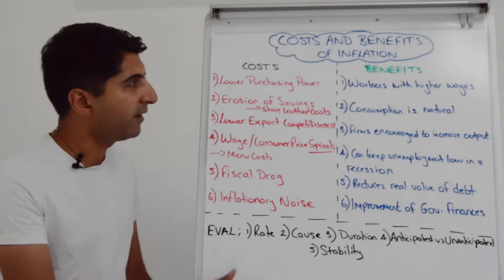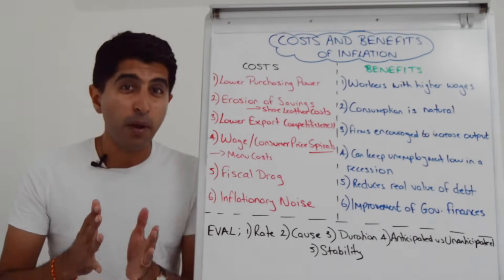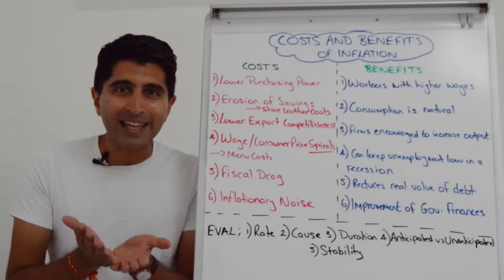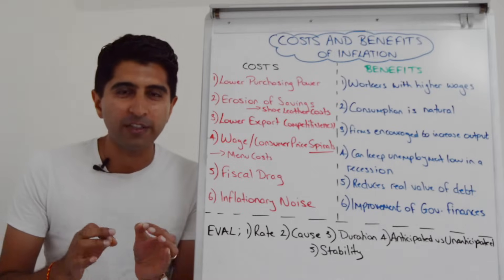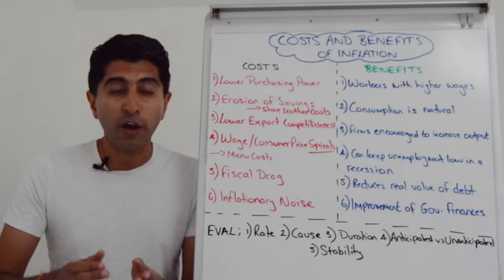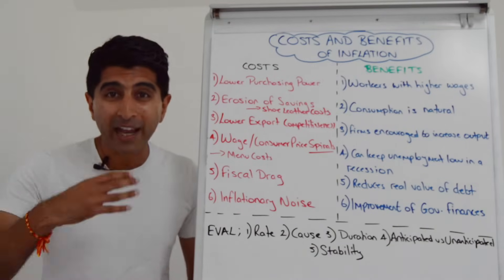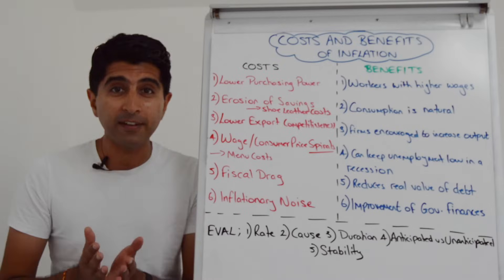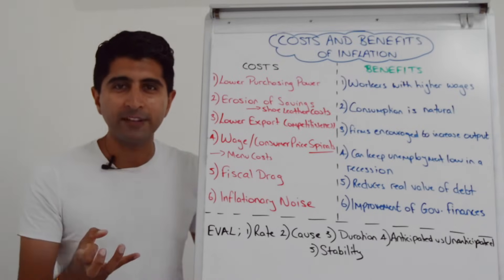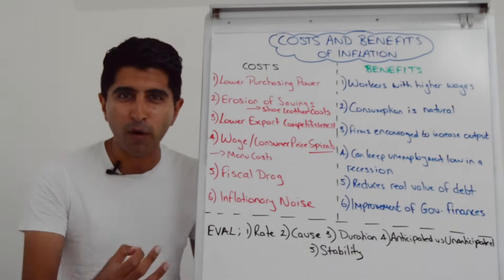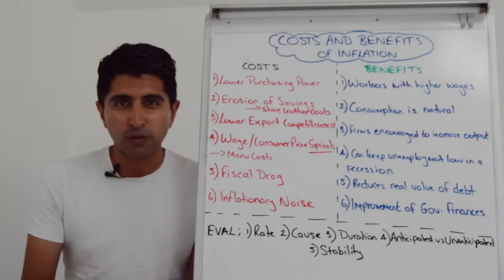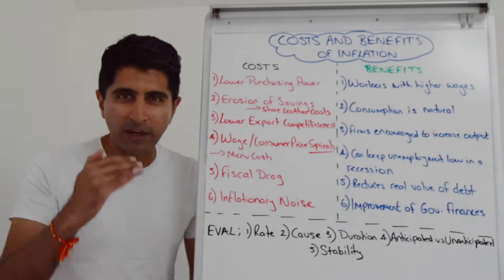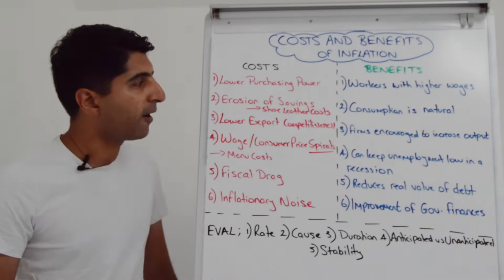One of the biggest costs of high inflation is a loss of purchasing power for households and workers. Assuming wages and incomes are not rising in line with inflation, then in real terms workers are worse off. This can affect their ability to buy basic life-sustaining goods and services, lower living standards, and for those on the lowest incomes, it could actually drive them into poverty and deprivation.